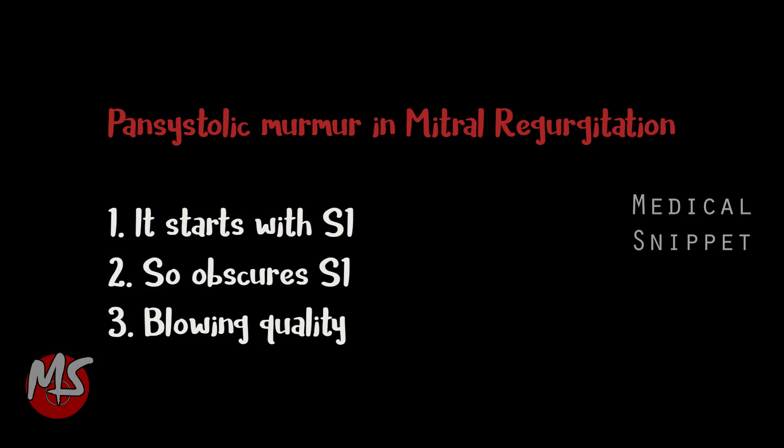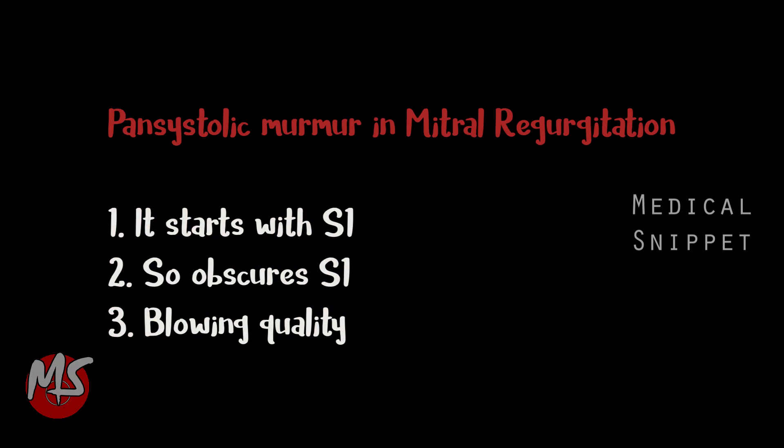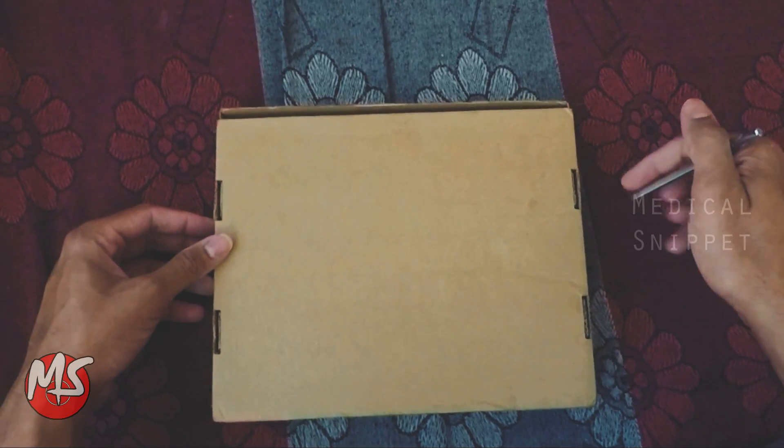Pansystolic murmur in mitral regurgitation. It starts with S1, so it obscures S1. It has a blowing quality.